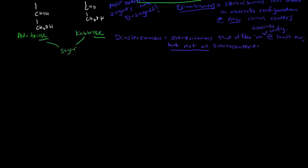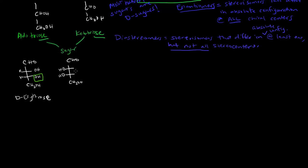Let me give a quick example with four-carbon sugars. This here is D-erythrose. We know it's D because the OH group on the last carbon from the top down is on the right. This other structure — with the OH groups switched — is L-erythrose, because all of the stereocenters are exactly opposite, making them mirror images of each other. So they are enantiomers.